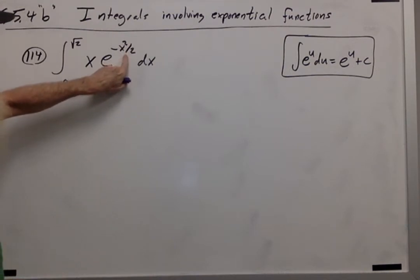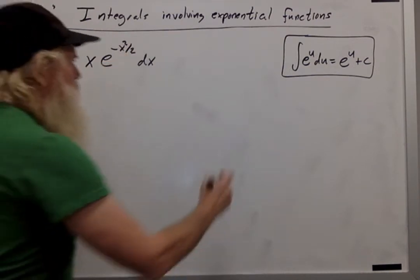So notice that the power on the exponential, our u, is negative x squared over 2.